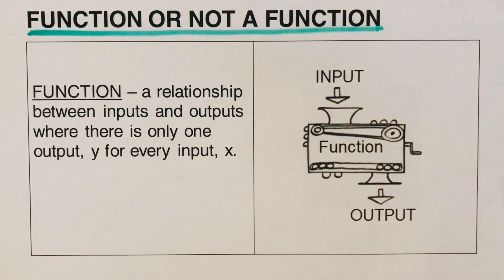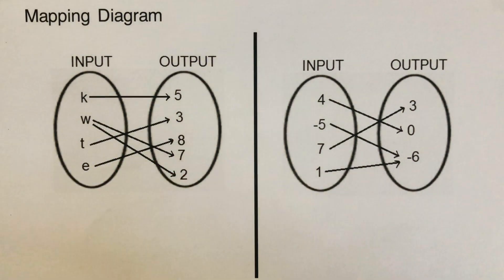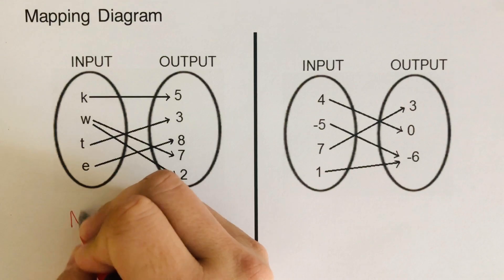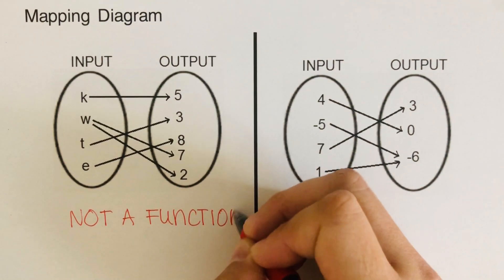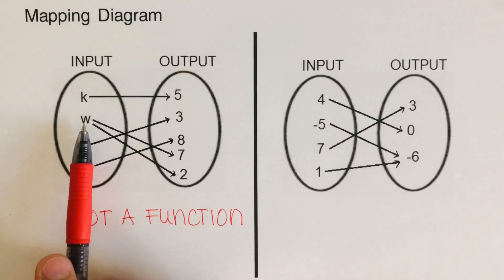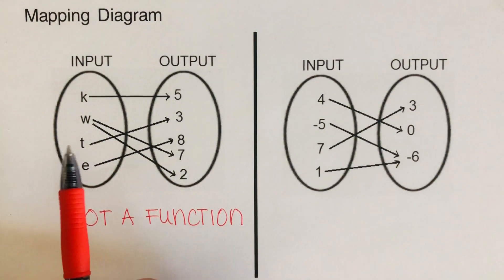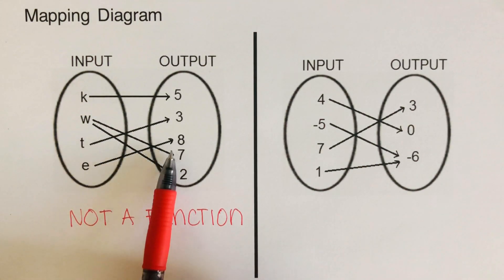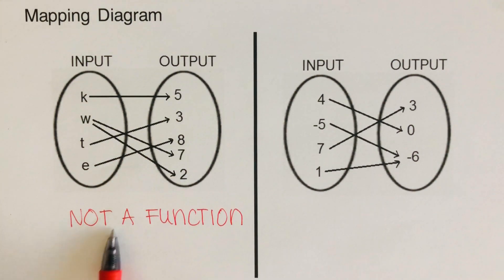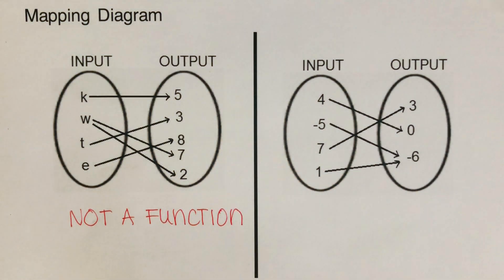To better understand this, let's have some examples. Let's start with the mapping diagram first. We have the input side and the output side. This first problem is not a function. The reason is that w has two outputs — it produces seven and two. So in the function machine, if I drop w into the machine, it will produce seven and two as the output. That means it is not a function because it's producing two outputs.